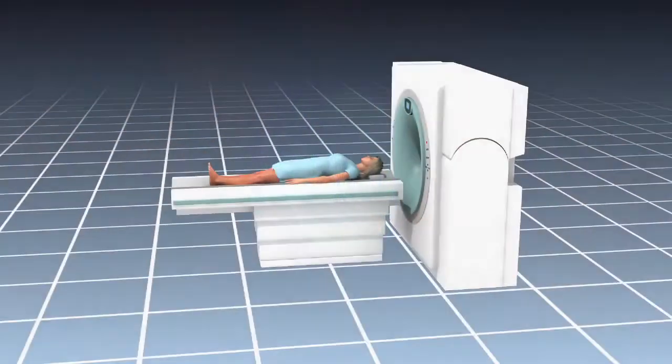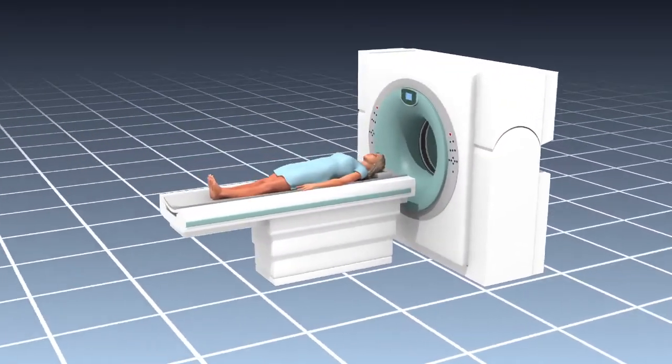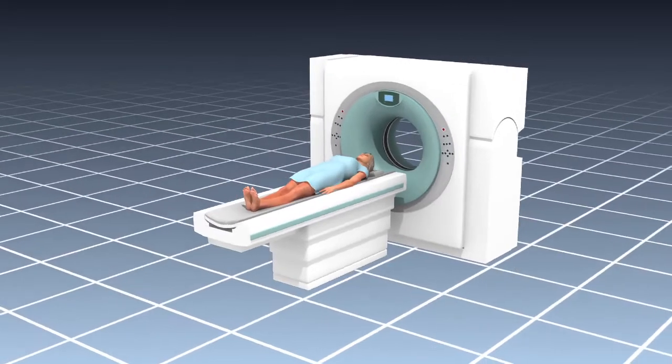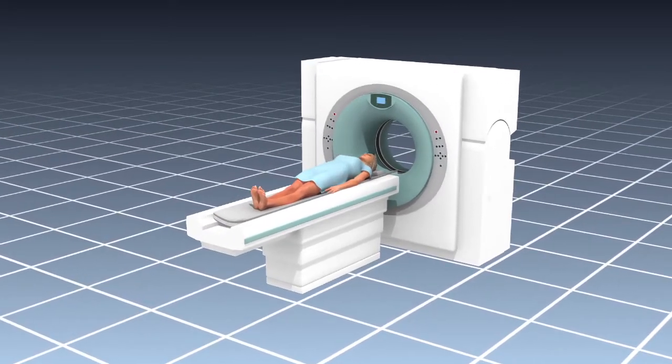It works like this. A patient generally lies on a flat bed that passes through the hollow middle of a device that looks like a giant square donut.